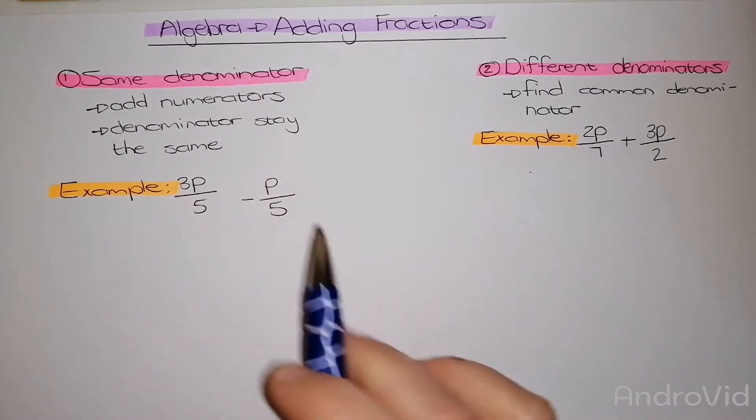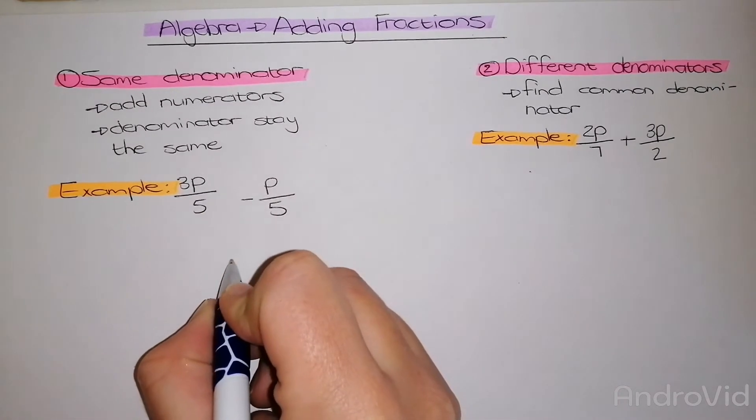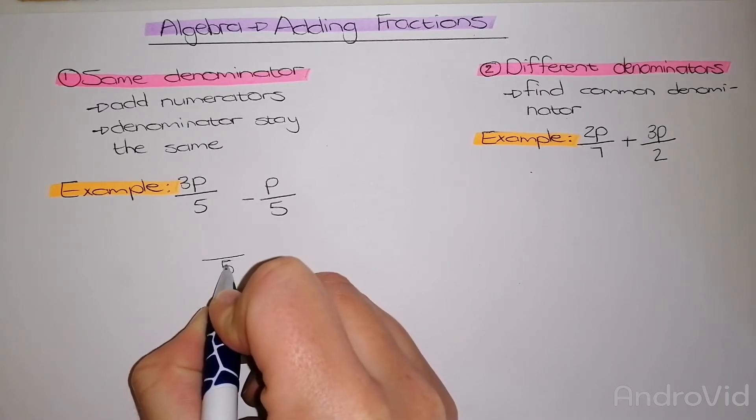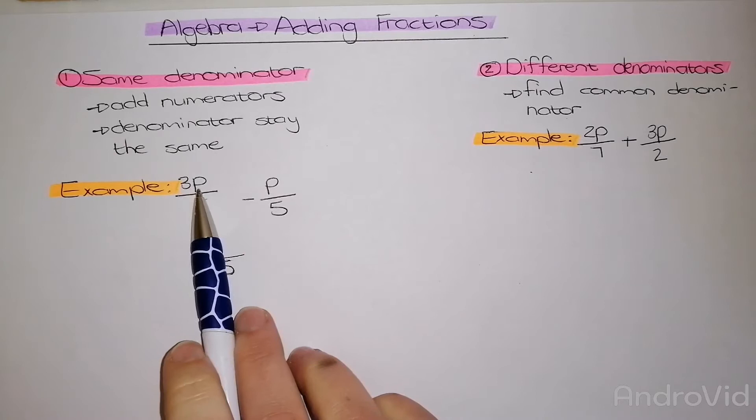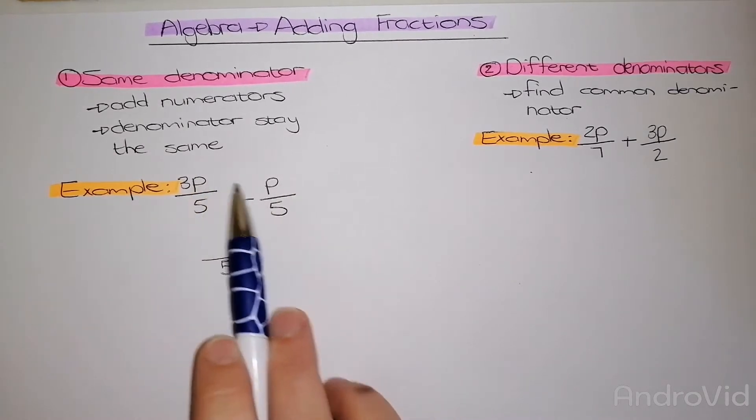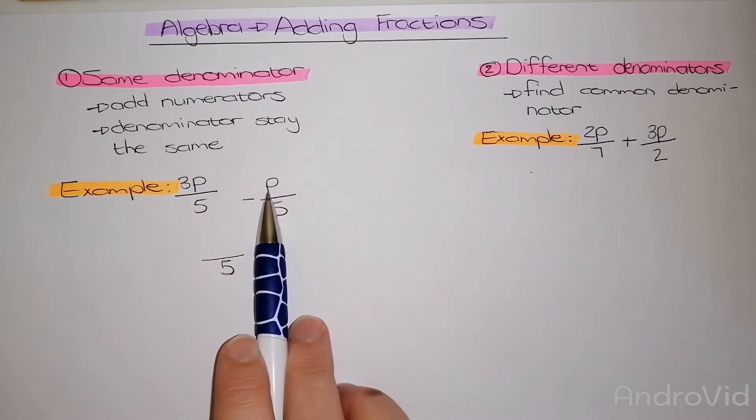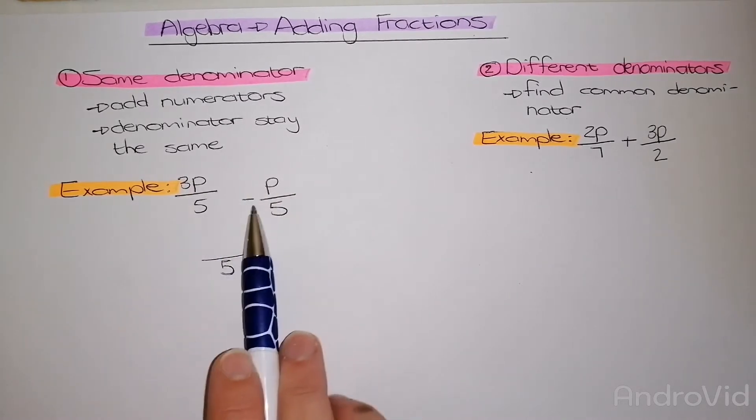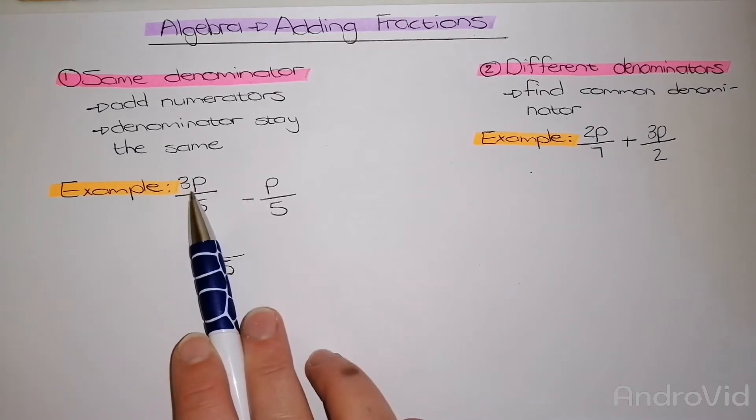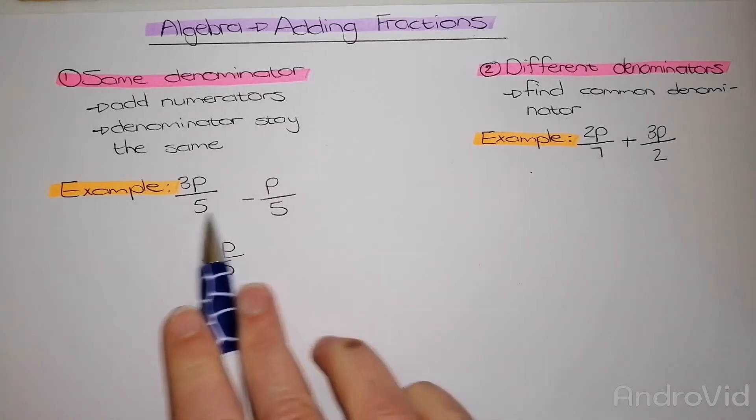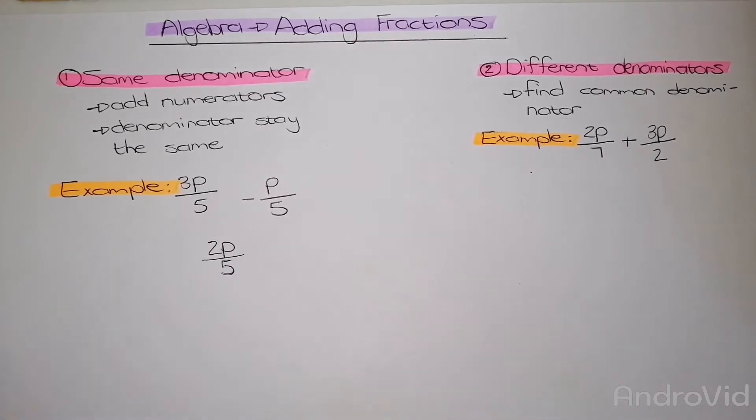In this case, my denominator is 5. So as an answer, I'm going to have 5 at the bottom, and then I need to look at my like and unlike terms. As you can see, the unknown is P, and it is the exact same unknown in both of these fractions. Therefore, all I need to do is add or subtract them. This is subtracting, so 3P minus P gives me 2P. And my final answer will then be 2P over 5.